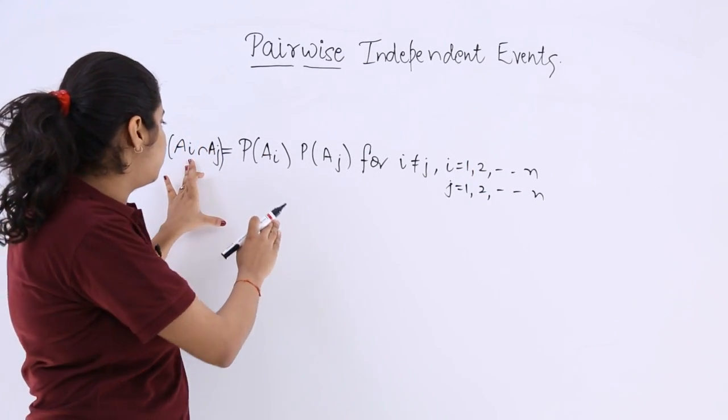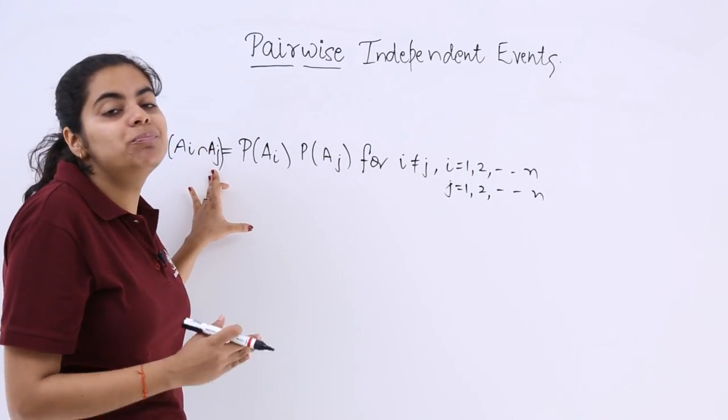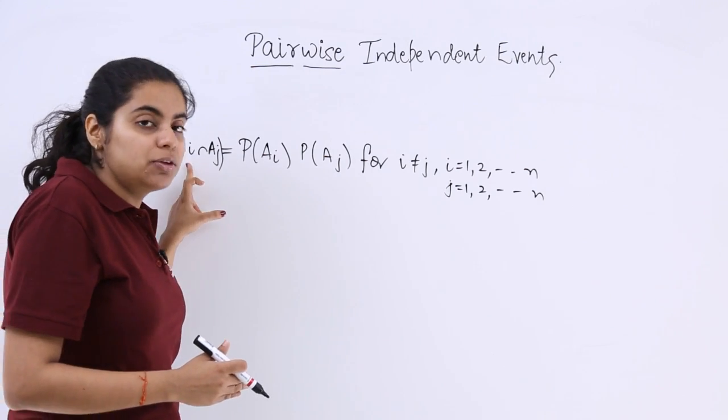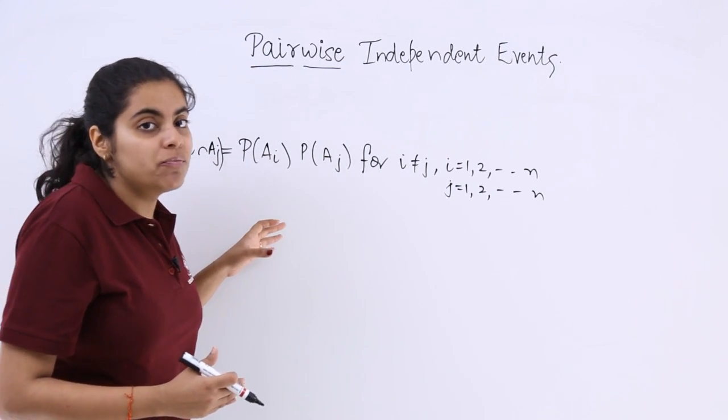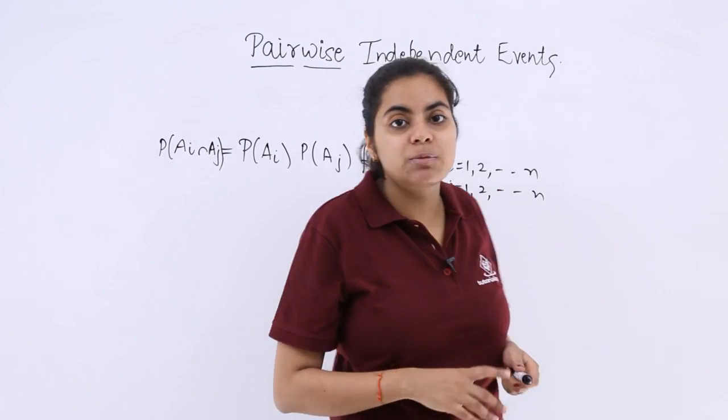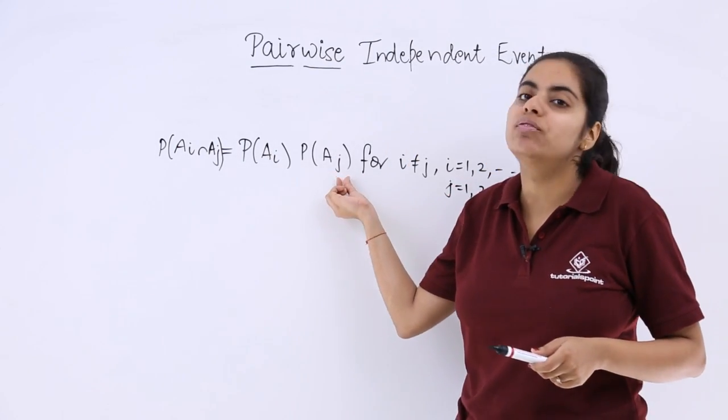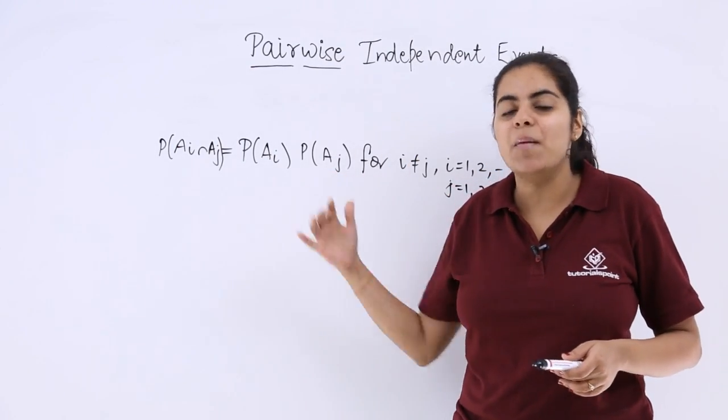If you have P of a1 here, then it cannot be a1 here as well. The first and second event should be different. So if you are talking about a1 in the first place, then j can take the value of 2 or 3 and so on up to n. Thank you.